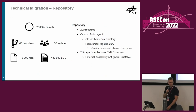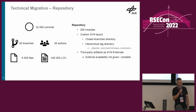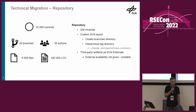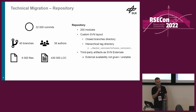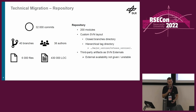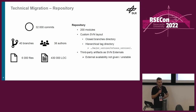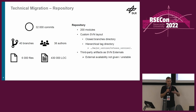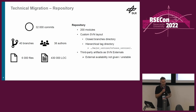Let's take a closer look at the technical migration. Our repository consists of about 32,000 commits, and at the moment we have 40 actively used branches. Over the whole time of RCE we have had over 38 different authors, and in total about 6,000 files containing 430,000 lines of code, structured into 200 different modules. Because the history of RCE is so long, we had to make some changes to the Subversion layout, including a different directory for closed branches and a hierarchical structure grouping release versions by major versions.